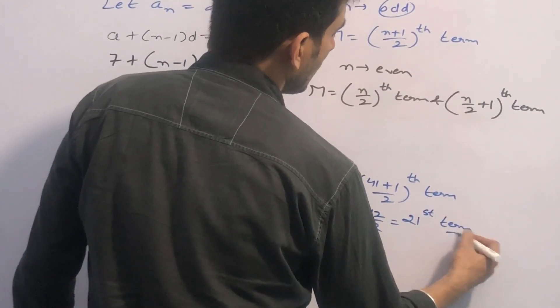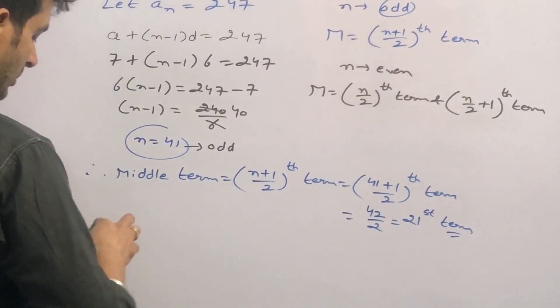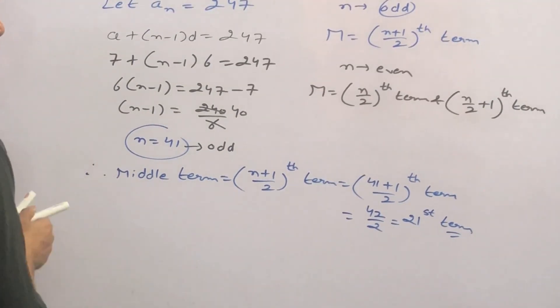21st term will be your middle term. So we will find the value of A21.